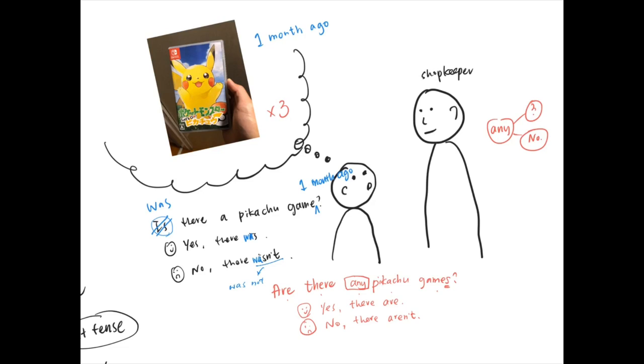How about for more than one Pikachu game? If we want to add one month ago, so what tense should we use? Of course, past tense. So we don't use are here anymore. Instead, we use were. Were there any Pikachu games? Yes, there were. Or no, there weren't. Again, the word weren't means were not.